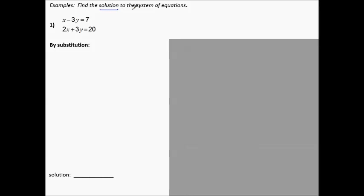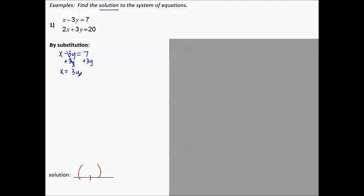Find the solution to the system of equations, number 1. Last time we did the method of substitution. Let's review what that looks like. A solution to a system of equations is an ordered pair containing an x and a y that, when plugged into each equation, makes both of them true. We started by looking for the equation that has one variable almost already solved for — this x doesn't have any number in front of it. So we take this equation and get x completely by itself: add 3y to both sides so that x equals 3y plus 7.